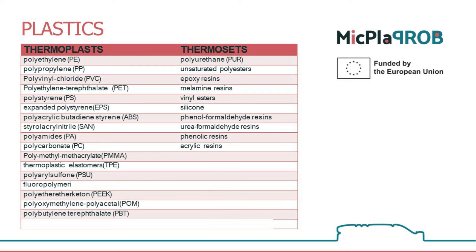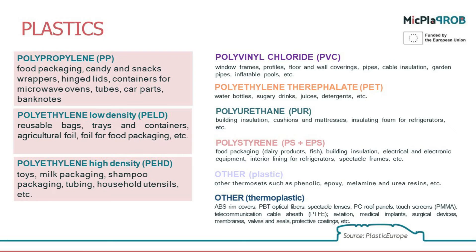I also collected the most frequently used plastics that we come across daily and added their abbreviations, mainly because labels on packages are often abbreviated. For example, PMMA stands for polymethylmethacrylate, usually found on personal care product packaging. As end users, you may be interested in which applications these plastics are used for.